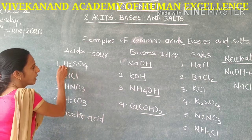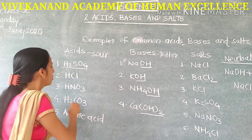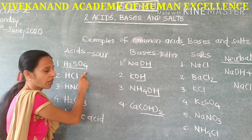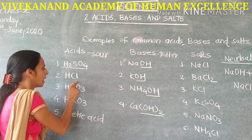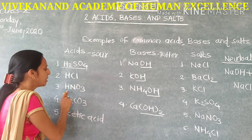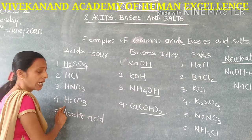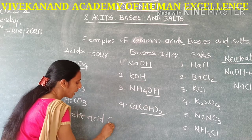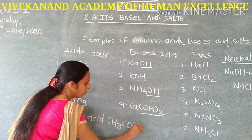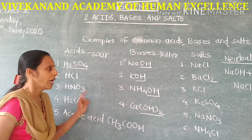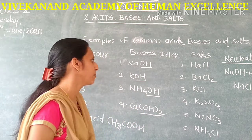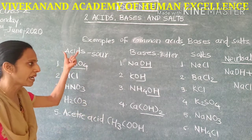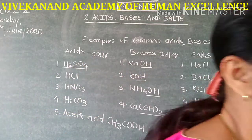You have to revise the molecular formula of each substance. H2SO4 is sulfuric acid, HCl is hydrochloric acid, HNO3 is nitric acid, H2CO3 is carbonic acid, and acetic acid formula is CH3COOH. Now we will take the reactions of acidic substances first. We will see how acids react with metals and how they react with bases.